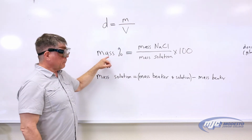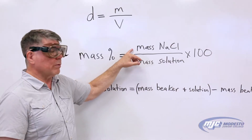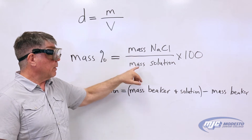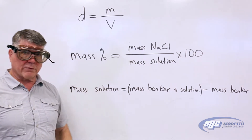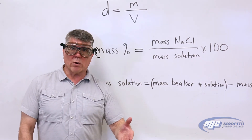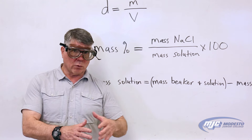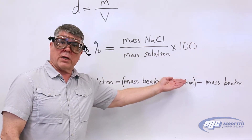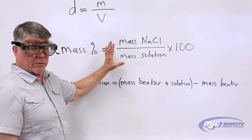Now mass percent — remember that's the mass of the solute divided by the mass of the solution times 100. In this case the solute is sodium chloride. We're going to measure how much sodium chloride there is and the mass of the solution. The way we have it set up, we're going to measure out the sodium chloride by itself, then add the water. We're going to measure the mass of the empty beaker and then the mass of the beaker with the whole solution in it. To get the mass of just the solution, we take the mass of the beaker with solution and subtract out the mass of the empty beaker.